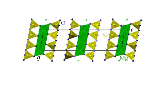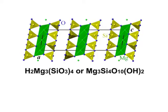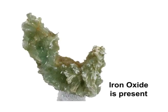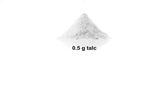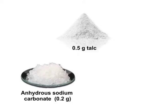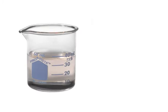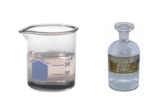Chemical constituents: talc is composed of hydrated magnesium silicate with the chemical formula H₂Mg₃Si₃O₈ or Mg₃Si₄O₁₀(OH)₂, and usually consists of small quantities of nickel, iron and aluminium as impurities. The variation of colour of talc to greenish or greyish tint indicates the presence of iron oxide. Chemical test first: fuse about 0.5 gram of talc with 0.2 gram each of anhydrous sodium carbonate and potassium carbonate in a platinum crucible. Dissolve the fused mixture into 50 ml of water and add hydrochloric acid until it ceases to effervesce.